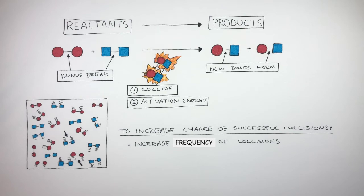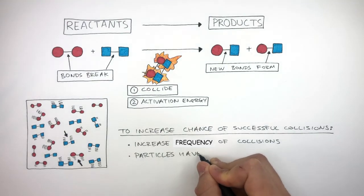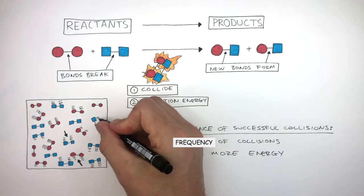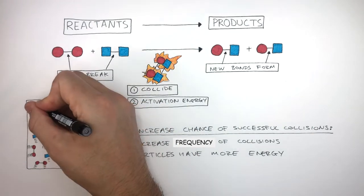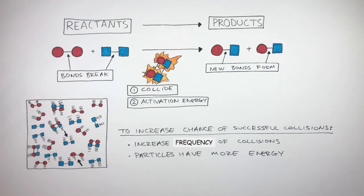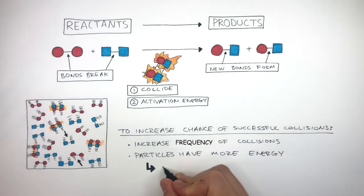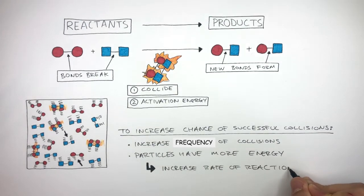A second way to increase the chance of successful collisions is particles having more energy, as shown here by increasing the number of vibration lines. These two factors, when increased, will increase the rate of reaction.